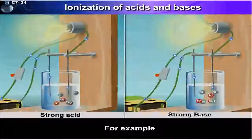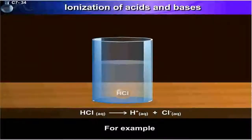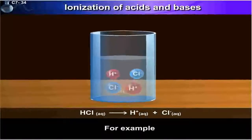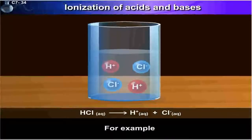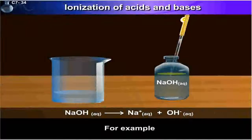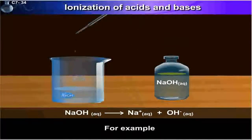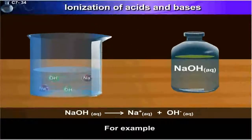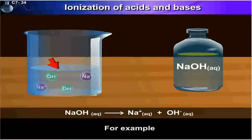For example, HCl dissociates into H+ and Cl- ions. Similarly, NaOH dissociates into Na+ and OH- ions.